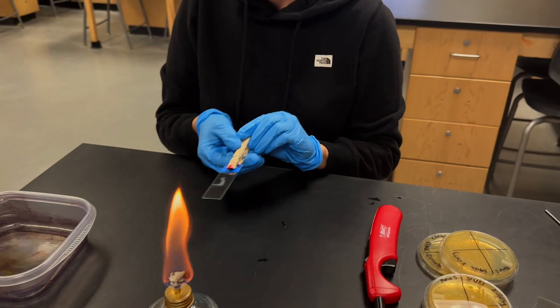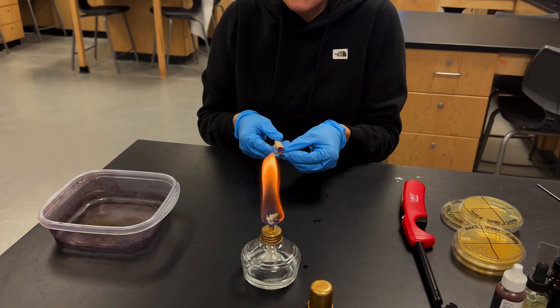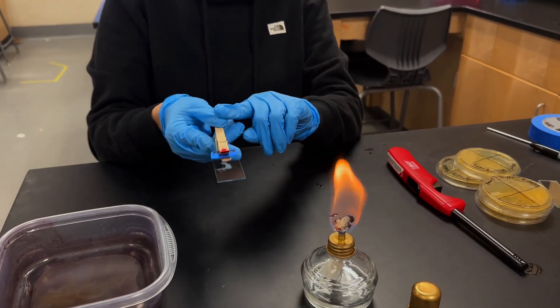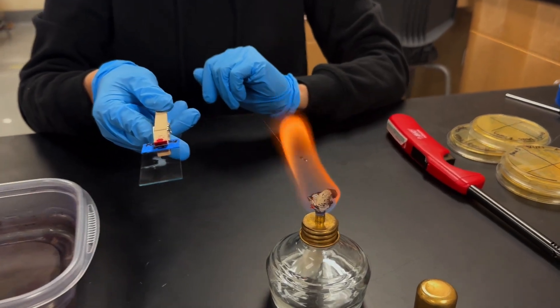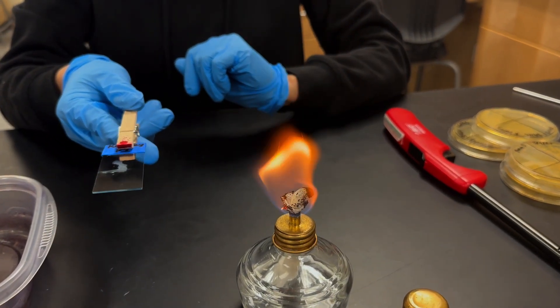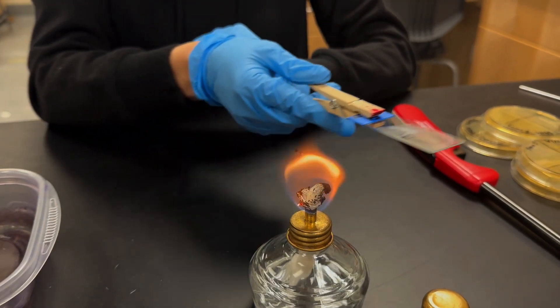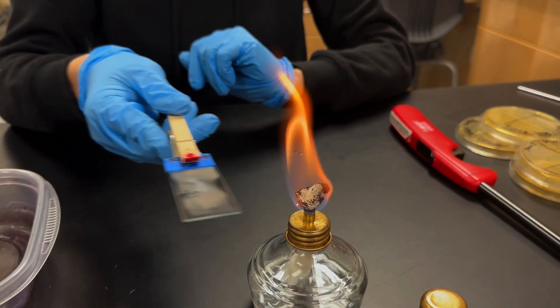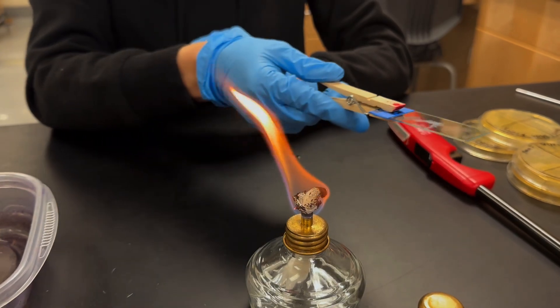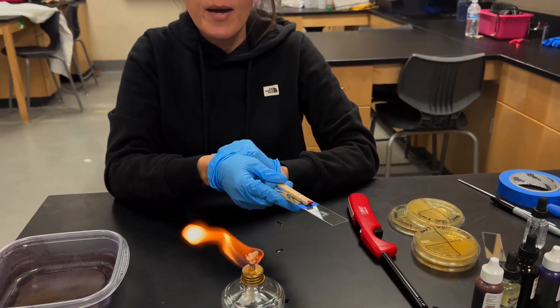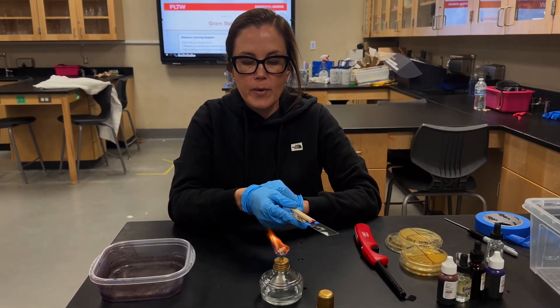And so we're going to do the fixation step of Gram staining now. And the way that we'll do that is just to run the slide through the flame three times. So we're passing it through three times. You don't want to hold it in the flame at any point. You just run it through three times. So we'll go like this one, two, and three being careful not to burn your label. If you have your label on and we don't want to hold it over the flame. That's important as well.